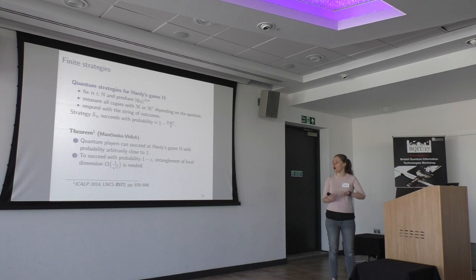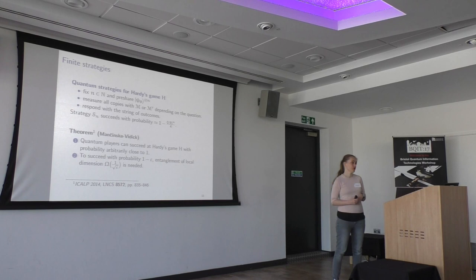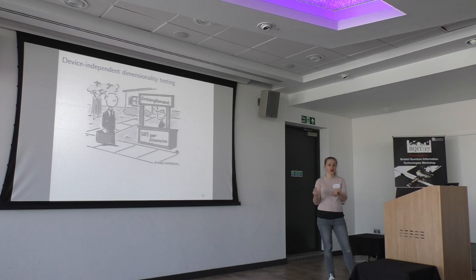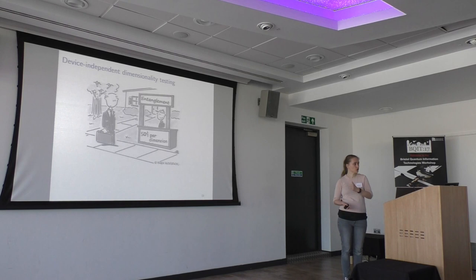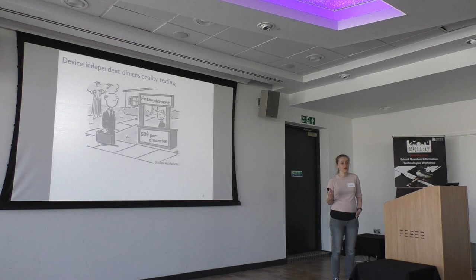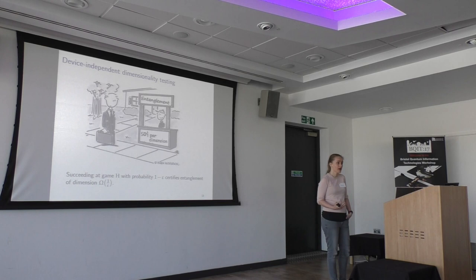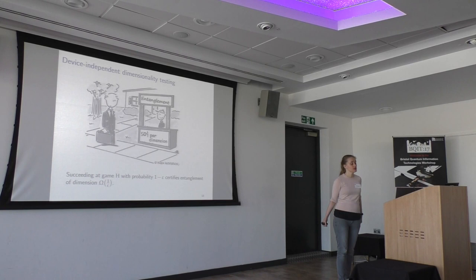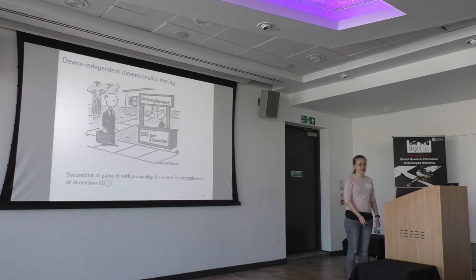So now we can go back to our starting cartoon. Charlie wanted to be sure that the state he's buying is indeed high dimensional. What he could do is challenge the vendor and the vendor's companion to some rounds of this game H. If he observes that they succeed with very high success probability, then he could be reasonably sure that the state they were using is indeed high dimensional. That's all I wanted to tell you about today. Thank you very much.